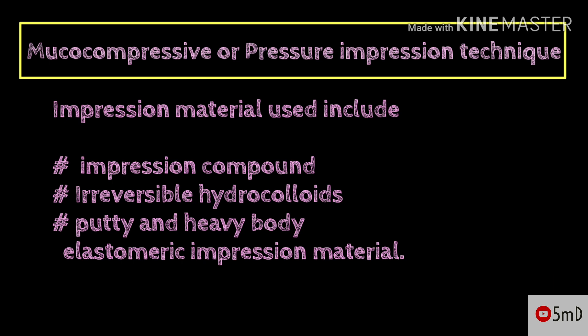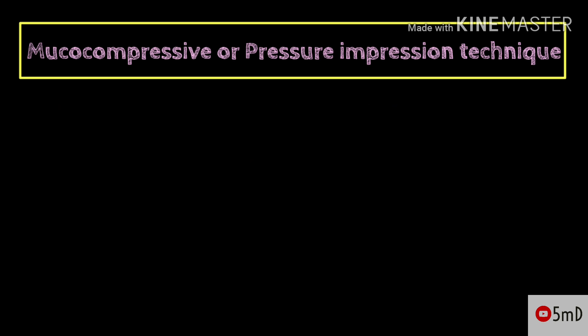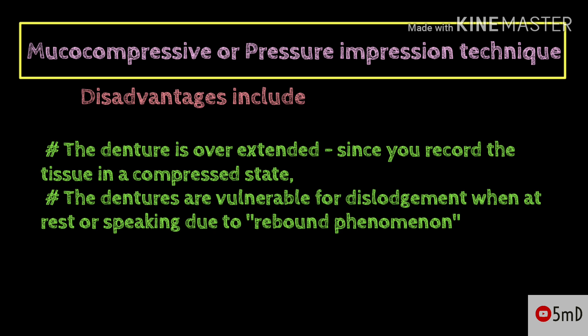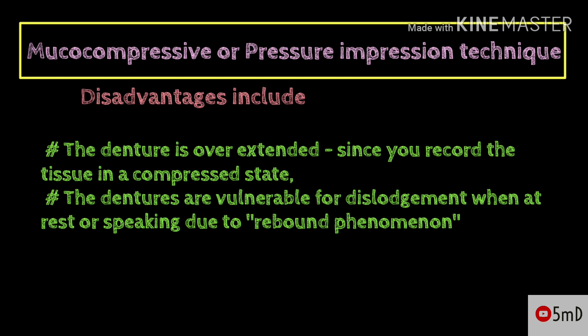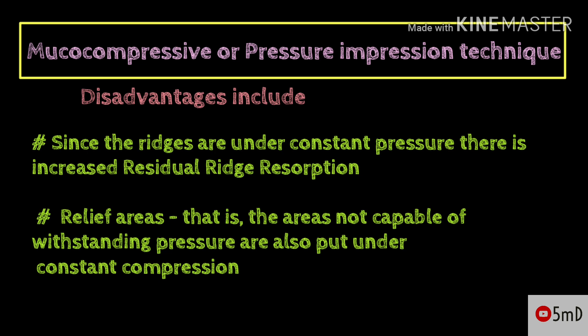The disadvantages of this theory: the denture is overextended. Since the tissue is recorded in a compressed state, the dentures are vulnerable to dislodgement when at rest or speaking, due to the rebound phenomenon of the tissues. Since the ridge is under constant pressure, residual ridge resorption is higher, and the relief areas — those not capable of withstanding pressure — are also put under constant compression.